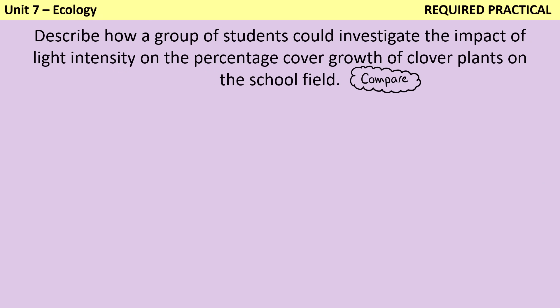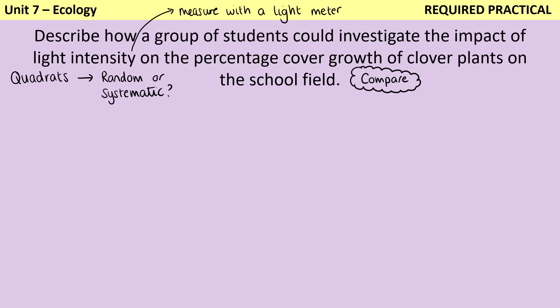Before you dive in, it's worth orienting yourself. For any kind of sampling question, we know we're going to be using a quadrat — and that's one of the very few words in GCSE science that we do need to spell correctly. For this question, they haven't specified whether they want random sampling or systematic sampling, and either one would do. We're investigating the impact of light intensity, so you want to describe how you're going to use a light meter to measure that. We've been asked about percentage cover rather than the number of individual plants, which means we're going to need a quadrat with internal divisions.